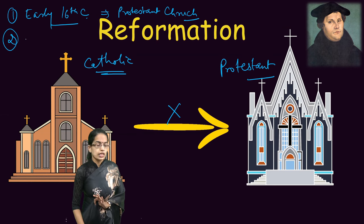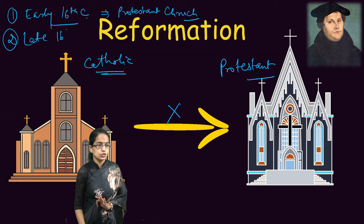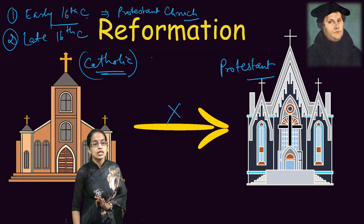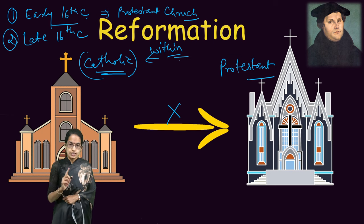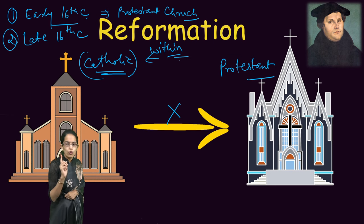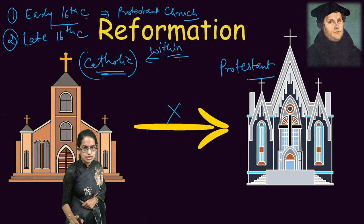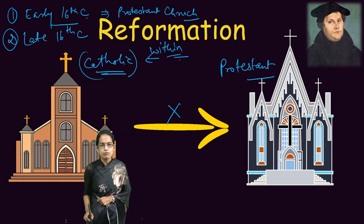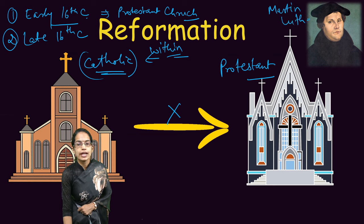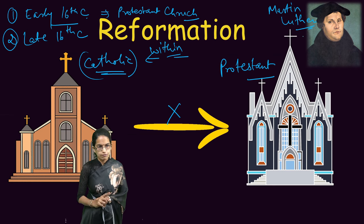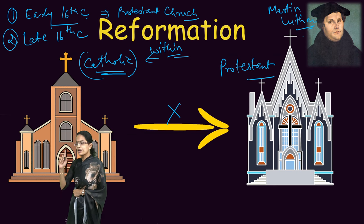The second Reformation phase was the late 16th century, and these were the changes within the Catholic churches. Reformation was the movement against the church, against the authority of the Pope. Martin Luther, who was a monk from Germany, was one of the pioneers who led this idea and this reform.